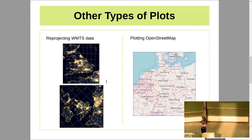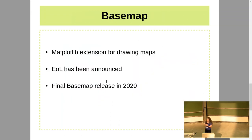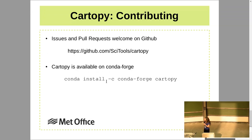Cartopy can do more sophisticated plotting. Here we've got a couple of examples of it reprojecting WMTS data and also accessing OpenStreetMap tile servers. Basemap exists in a similar area, but they are coming to the end of their development, and Cartopy was originally developed to improve on Basemap. If you're still using Basemap, I'd encourage you to move over to Cartopy. Contributions are very welcome to our GitHub Cartopy repo, and Cartopy is also available on Conda Forge if you'd like to play around with it.